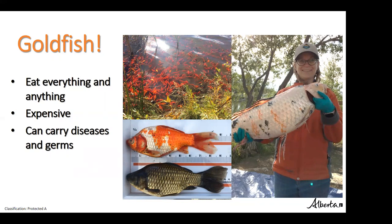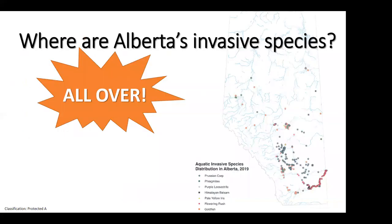Without chemicals, controlling goldfish takes a lot of time and money. The St. Albert population required trying scooping, electrofishing, draining the water to just a few inches and letting it freeze over winter — nothing worked. Eventually chemicals were used, which was very costly. Goldfish also carry germs and diseases transferable to other fish, and carry bacteria in their stomachs that can cause blue-green algae blooms, which can make humans and pets quite sick.